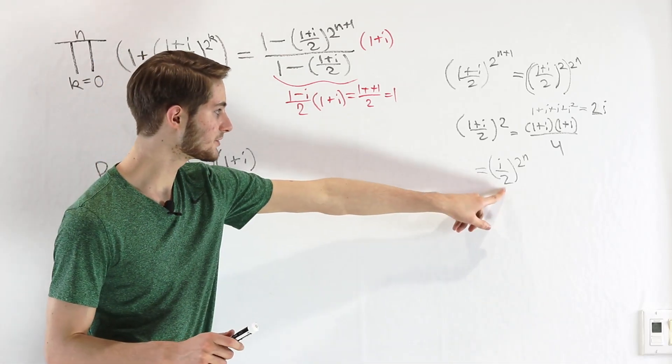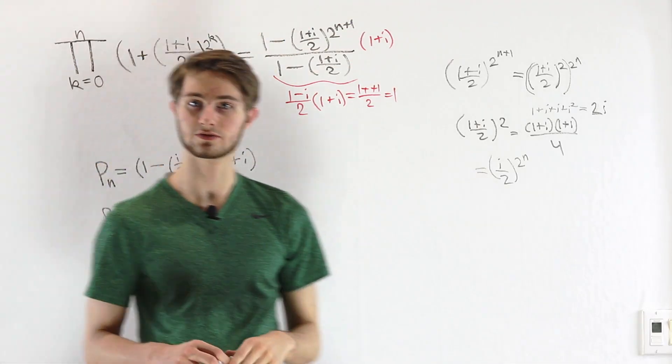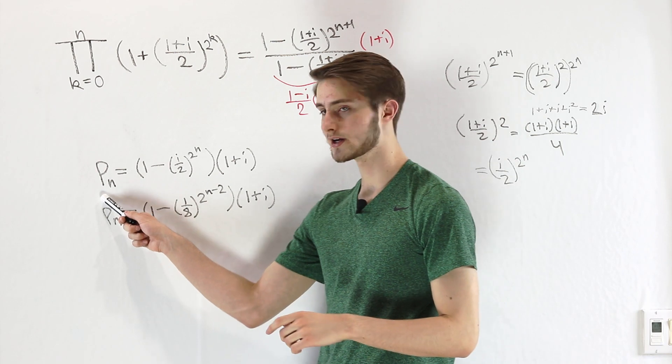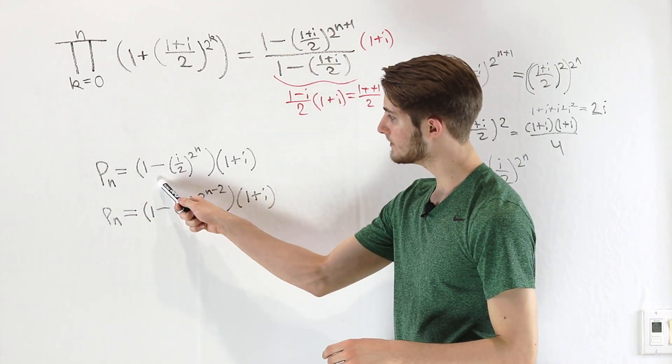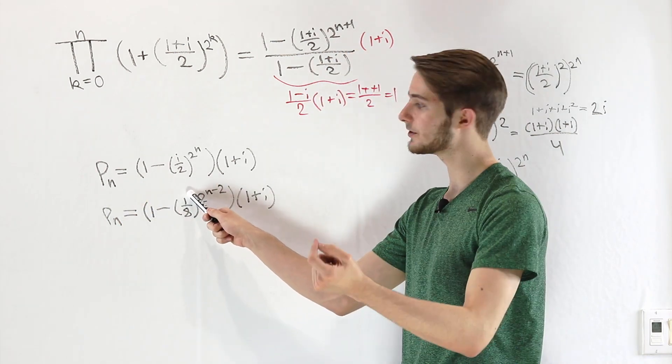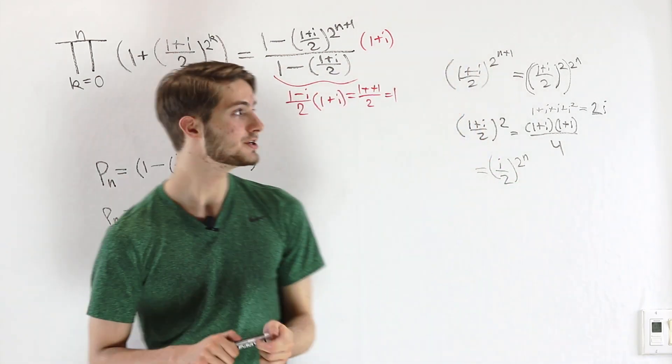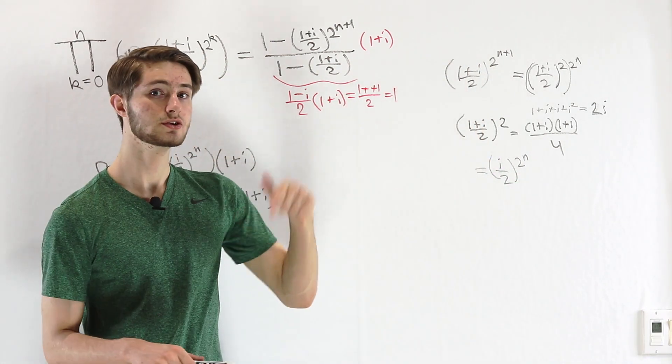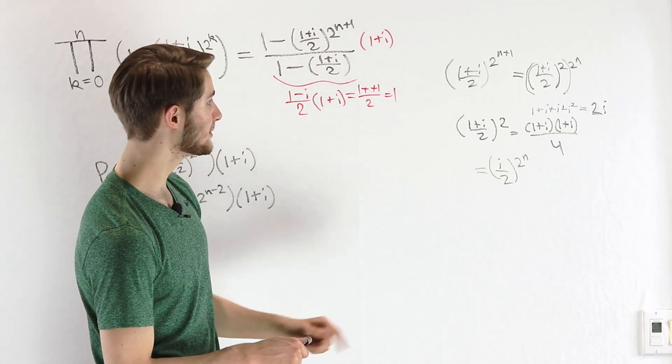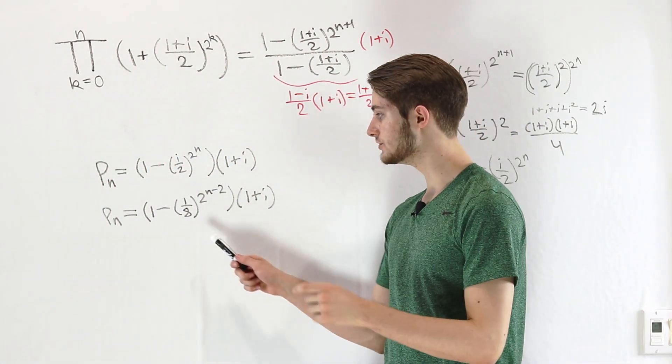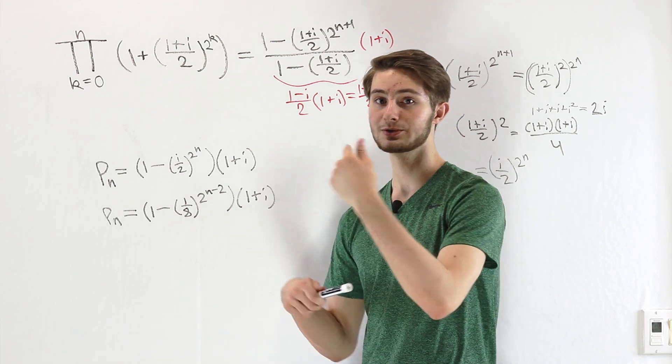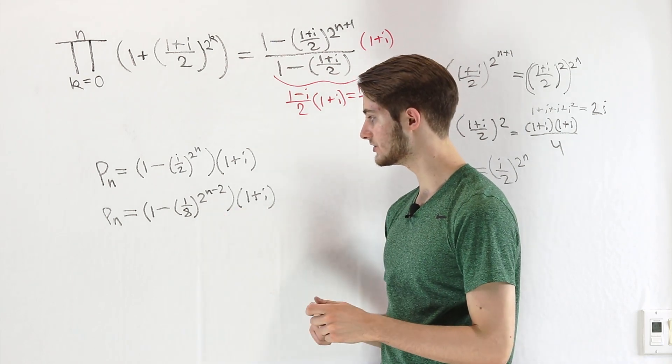If we take this simplified expression and plug it into our formula, we get the finite product P_n as (1 - (i/2)^(2^n))(1 + i). We can actually do this exact same process two more times. If we think about taking out another factor of 2, so we have 2^(n-1), and then we do it again, so we have 2^(n-2),